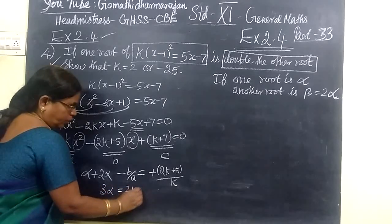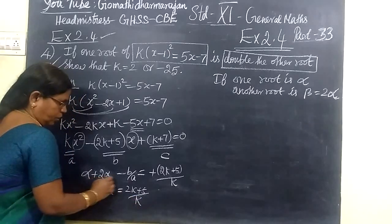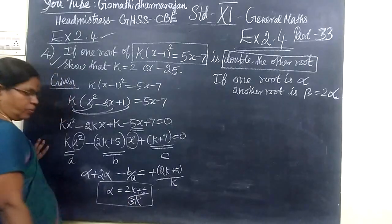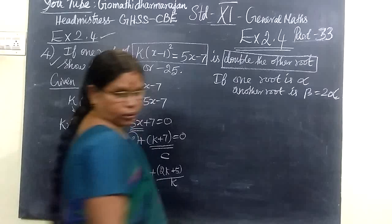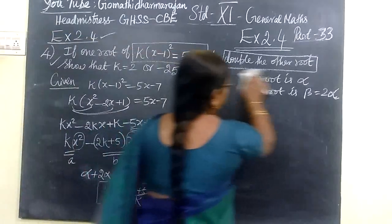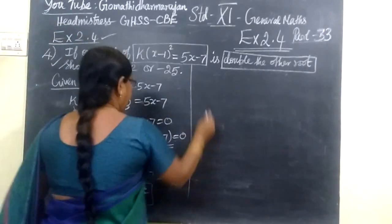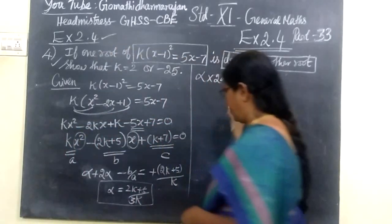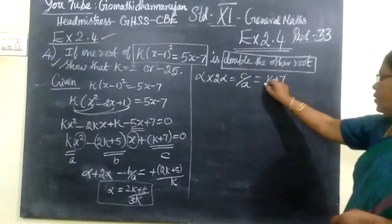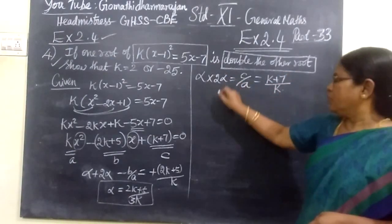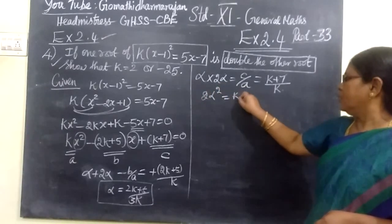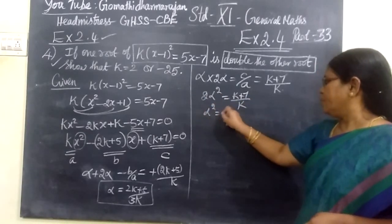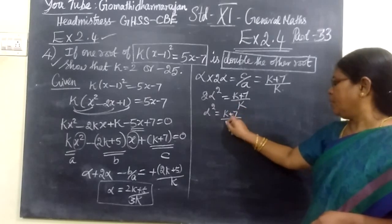So 3 alpha equals (2k plus 5) by k. Dividing both sides by 3, this is the value of alpha. And the product of the roots: alpha into 2 alpha equals c by a. What is the value of c? c equals k plus 7. So 2 alpha squared equals (k plus 7) by k, therefore alpha squared equals (k plus 7) by 2k.